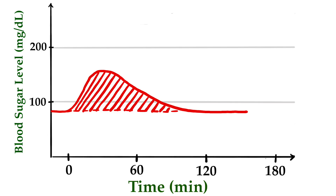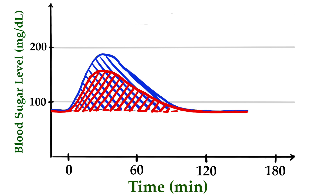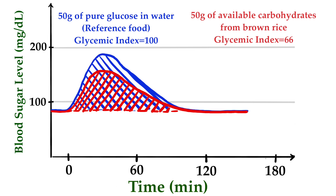Let's assume the curve after eating brown rice shows a red area under the curve that was 66% of the blue area from the glucose test. Then the glycemic index of brown rice for this one person would be 66. The glycemic index of a food is not determined from the data of one person — this experiment may have been repeated in dozens or hundreds of people worldwide, and the glycemic index is set as the average of all individual tests.